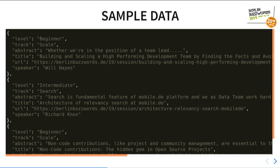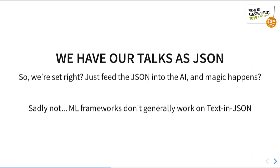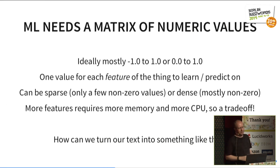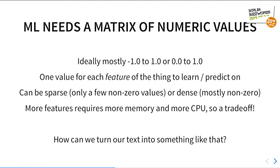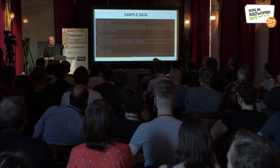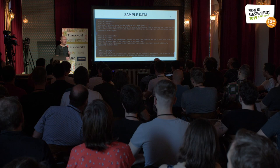Taking all the Berlin Buzzwords talks and putting them in JSON — are we set? No. Just as the ML frameworks don't work with spreadsheets, they also don't work with JSON of text. What we mostly need is values between minus one and plus one, or zero and one — one value for each feature of the thing we're going to learn on. It could be a really sparse representation with a handful of non-zero values, or a really dense one. But what we've got is text. Turning it into ASCII hex codes would give us ones and zeros, but that's probably not going to be the best feature representation.